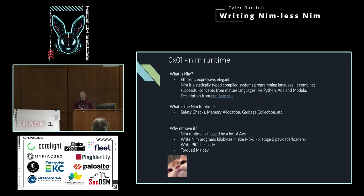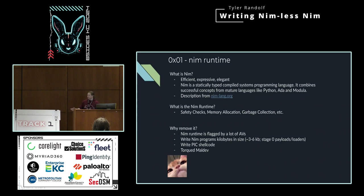A lot of AV tools and scanners have flagged the Nim runtime, and it's very easy to notice when a Nim binary is a Nim binary. If we remove the runtime, we can also get a Nim program that's kilobytes in size — anywhere around three to six, sometimes more, depending on how you compile it. This is good for stage-zero payloads and loaders. You can also leverage this for position-independent shellcode, and as an added benefit, it's portable.